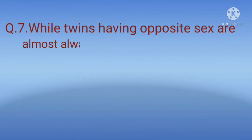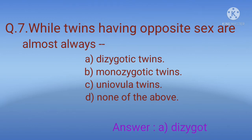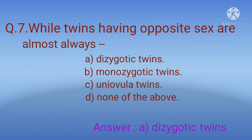Question 7: Twins having opposite sex are almost always? Options: A) Dizygotic twins, B) Monozygotic twins, C) Unipolar twins, D) None of the above. The correct option is A, dizygotic twins. In dizygotic twins, only opposite-sex fetuses are developed.